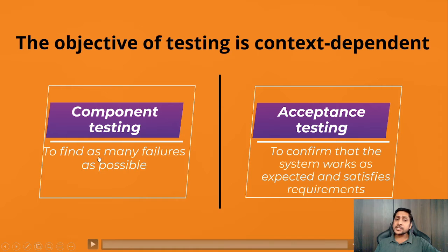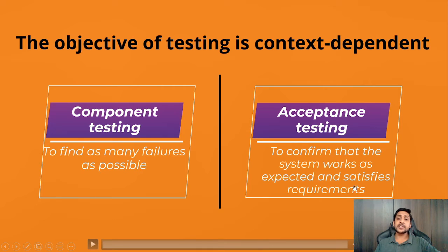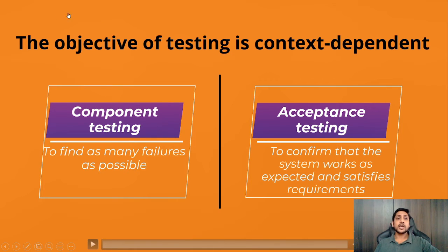When a customer is performing acceptance testing, they do not want to find as many bugs as possible — they want to confirm the system satisfies requirements. So the objective changes based on the context and the level of testing, which is why we say the objectives of testing are context dependent.